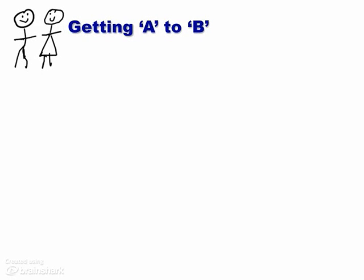In this session, we're going to describe one way to get A, that is, assets, to B, the beneficiary, while taking into consideration C, different conditions.